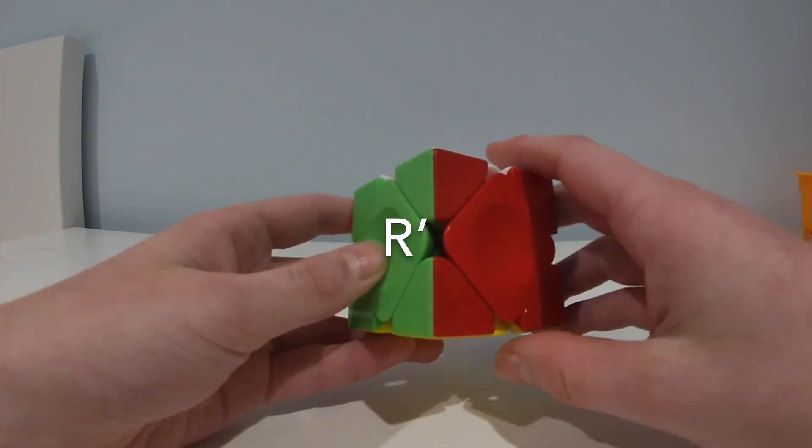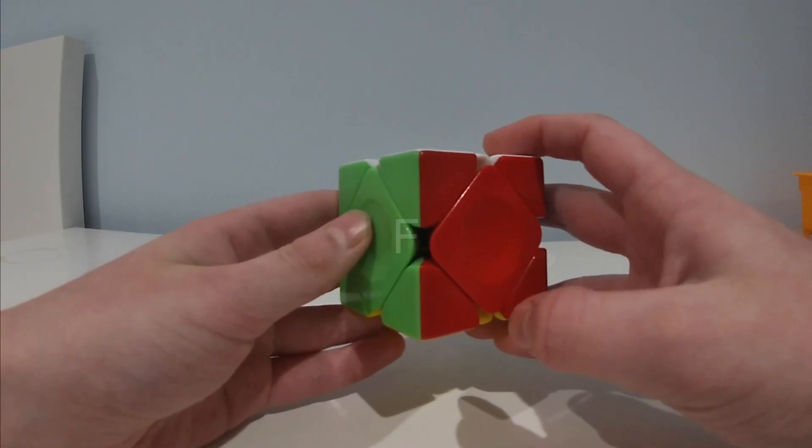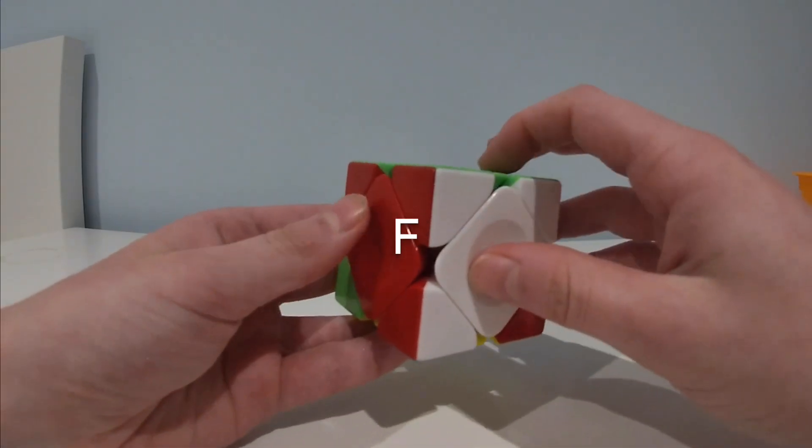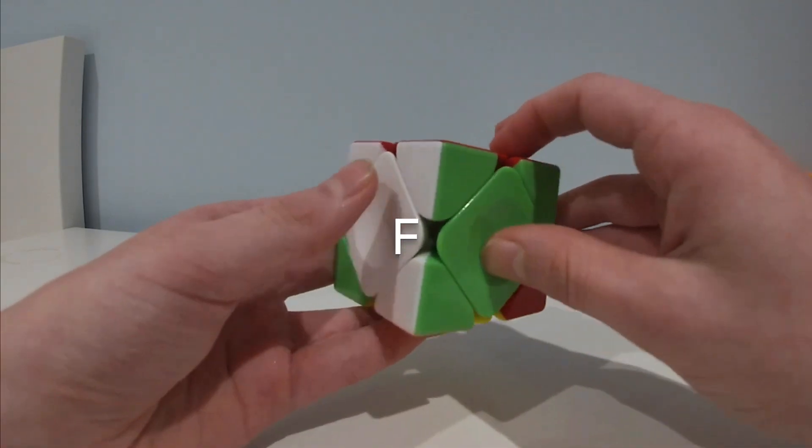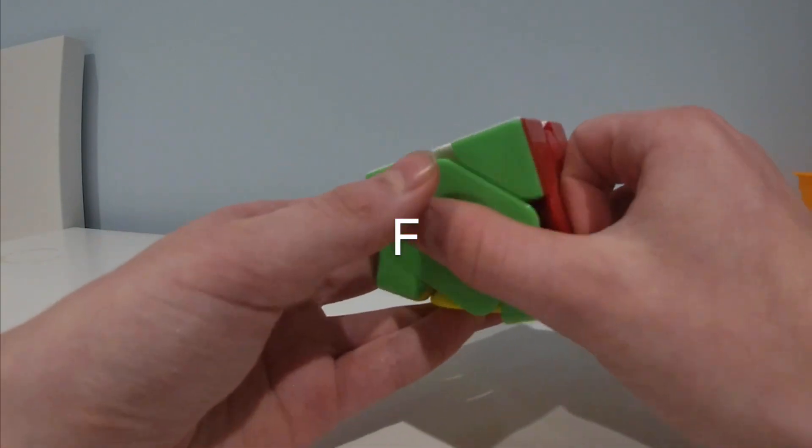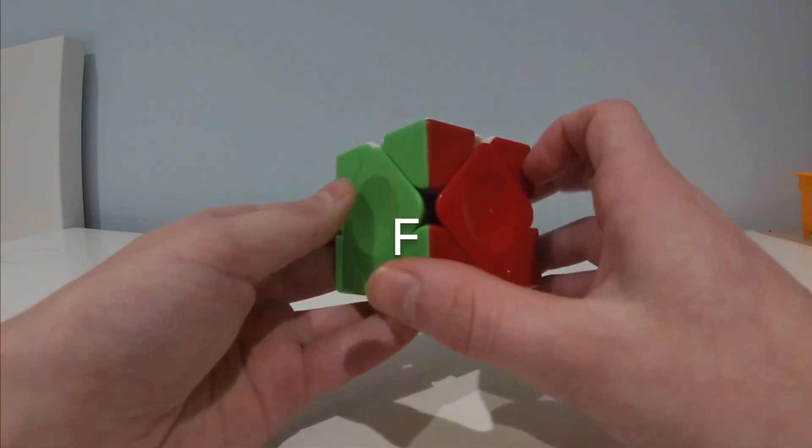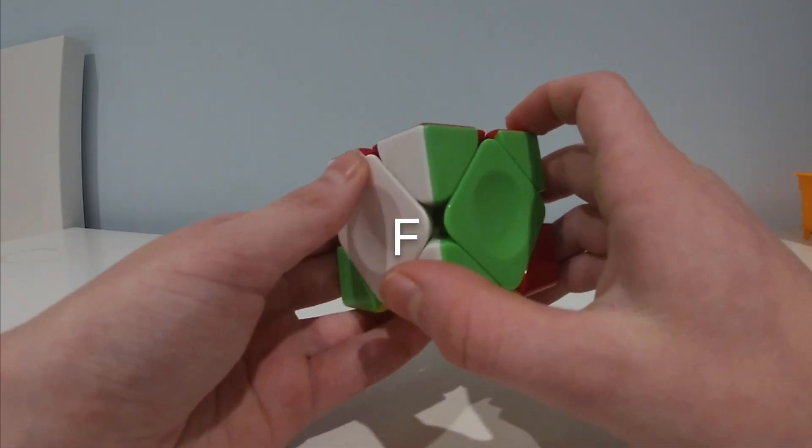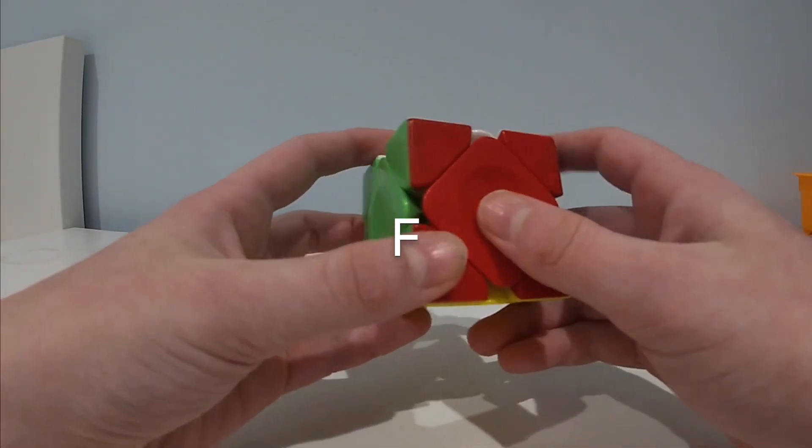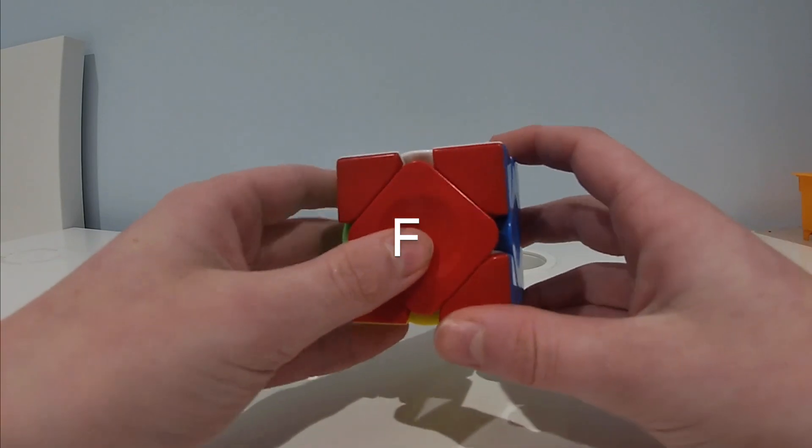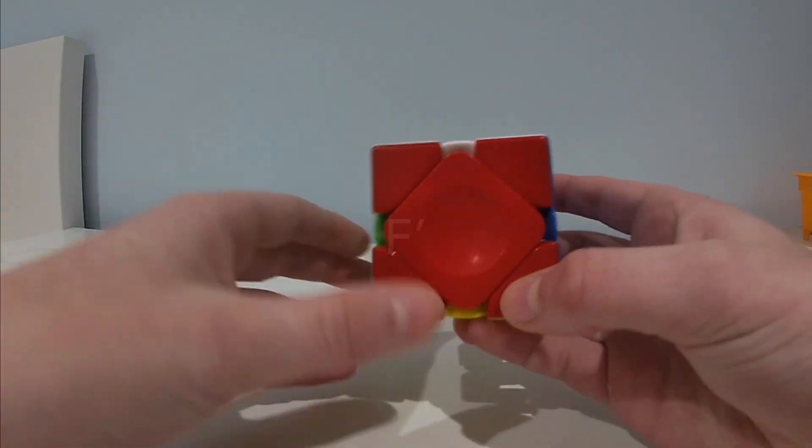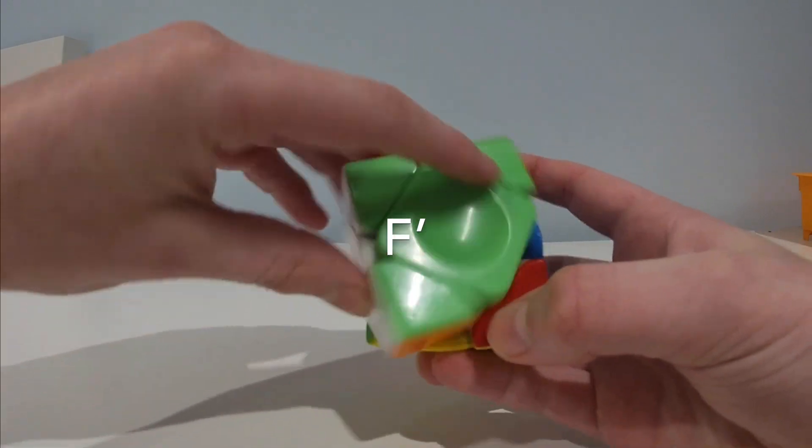The other one you need to know is F and F prime. F turns around this front corner in the clockwise direction. And F prime goes in the opposite direction, anti-clockwise. F from this angle looks like this, and F prime is just that but going the other way.